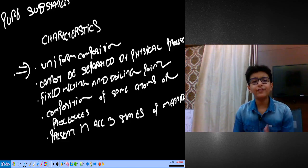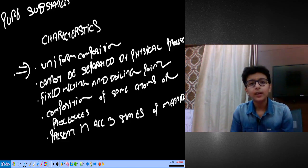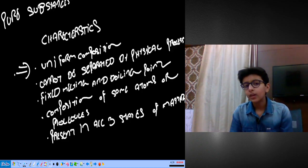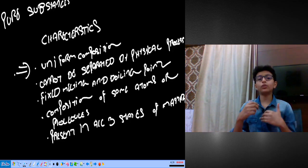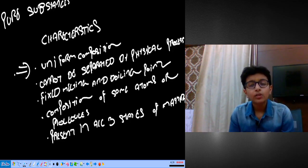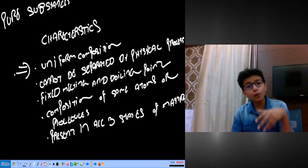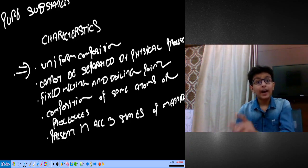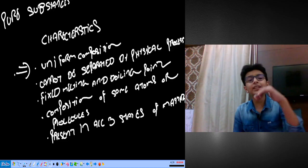The third characteristic is fixed melting point and fixed boiling point. For example, ice has a fixed melting point, and water has a fixed boiling point. If it is pure water, it will boil at 100 degrees Celsius. If it boils at a different temperature, like 105, then there are impurities present.